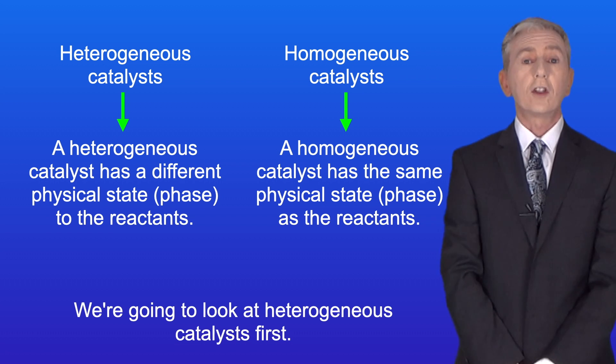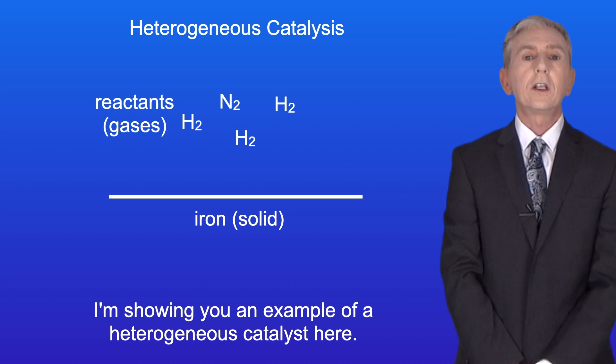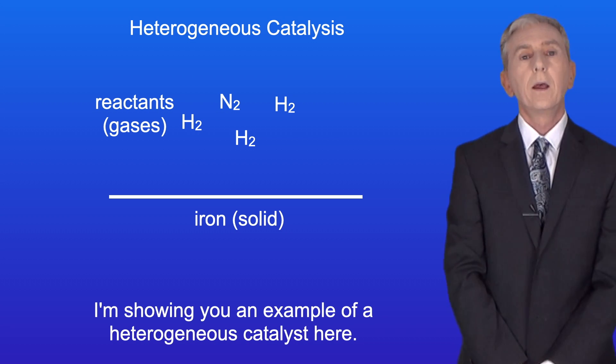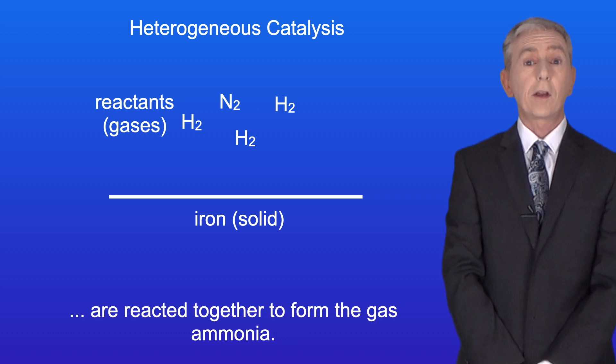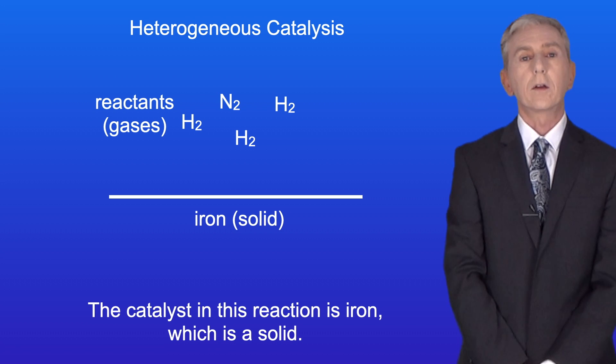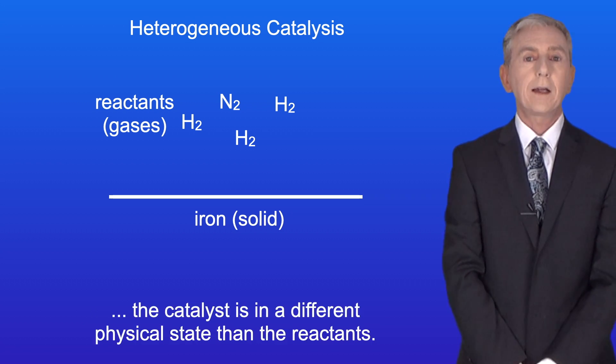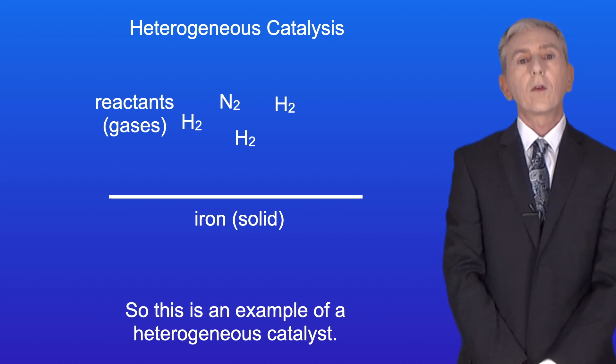We're going to look at heterogeneous catalysts first. I'm showing an example of a heterogeneous catalyst here. In the Haber process, the gases nitrogen and hydrogen are reacted together to form the gas ammonia. The catalyst in this reaction is iron, which is a solid. So as you can see, in this reaction the catalyst is in a different physical state than the reactants. So this is an example of a heterogeneous catalyst.